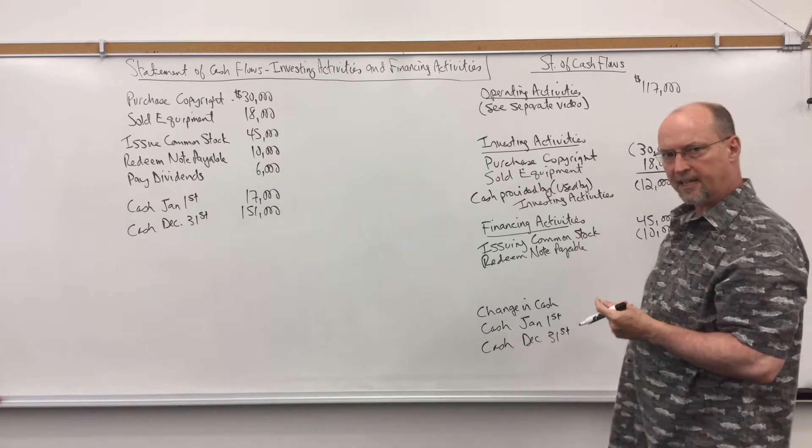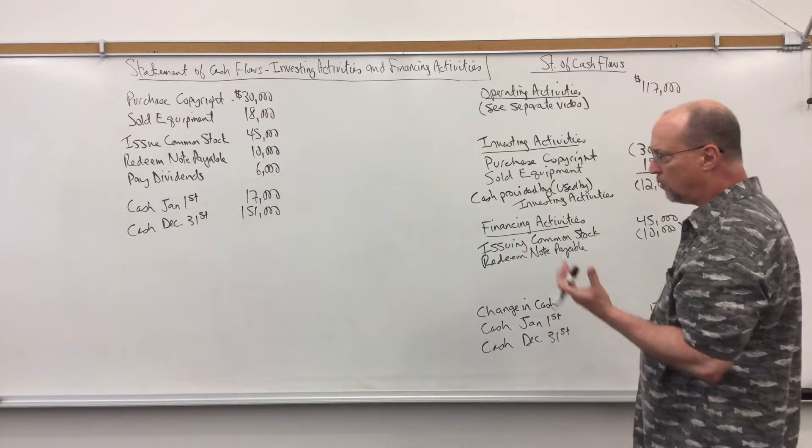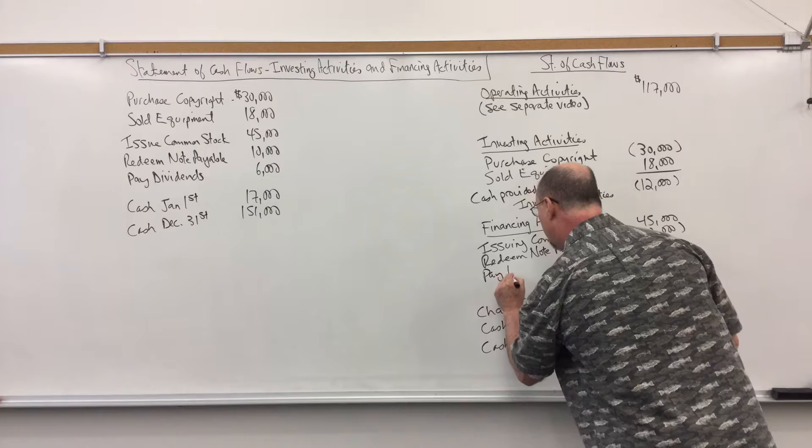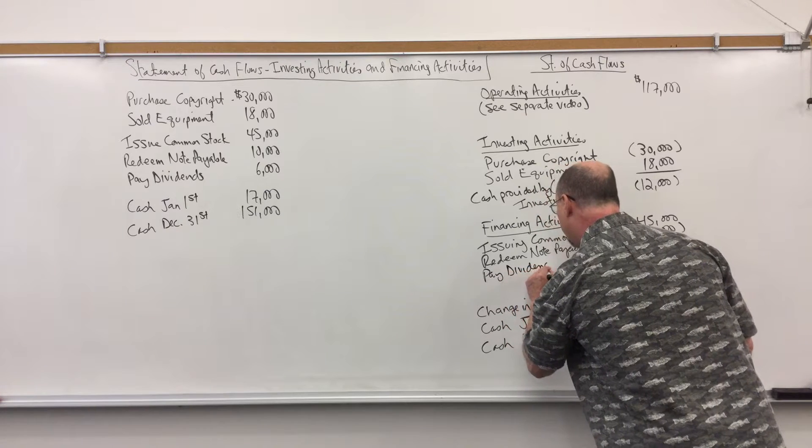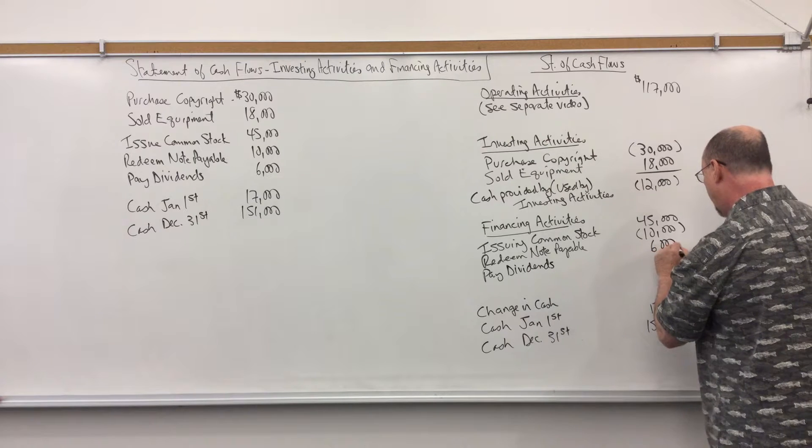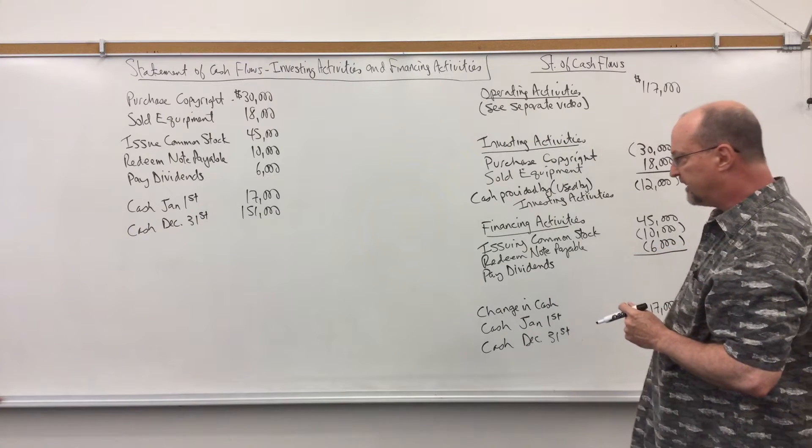And then last we paid a dividend whether it's the preferred or common stock doesn't really matter in this example. We'll assume it's common stockholders. So I'll put paid dividends $6,000. Again that is a use of cash so I'll put brackets around it. And those are my financing activities.